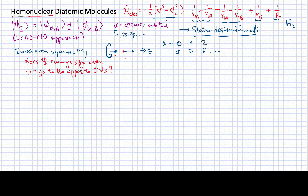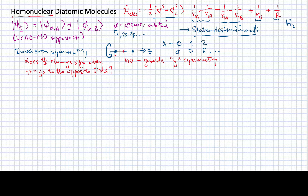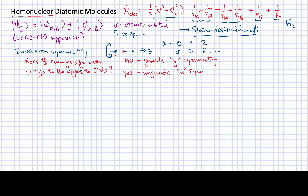If the answer is no — that it stays the same sign — then we say that this state has something called gerade or g-symmetry. Gerade is a German word that indicates it didn't change sign. If the answer is yes, there's a German word for the opposite of gerade, and it's called ungerade — we say it has u-symmetry. So g and u refers to whether the wave function changes sign when you go through the center.